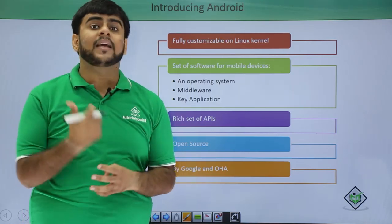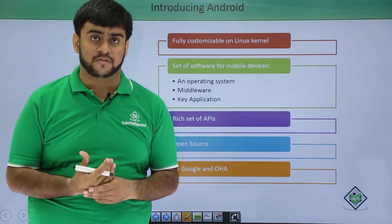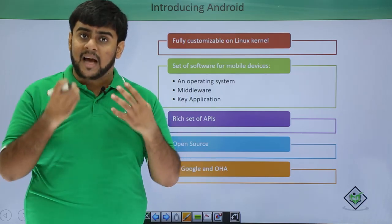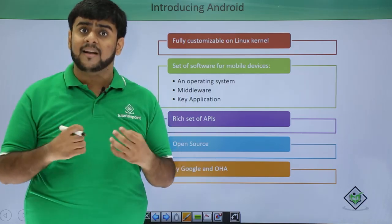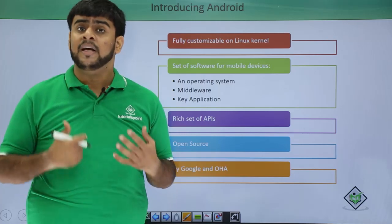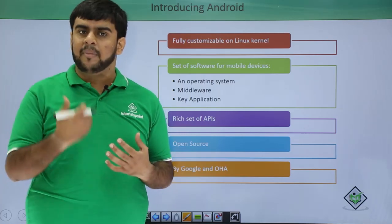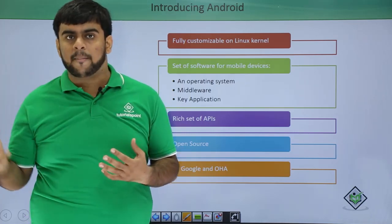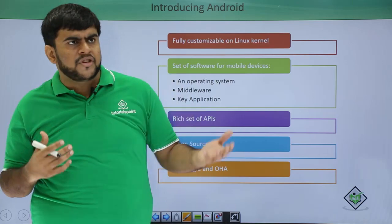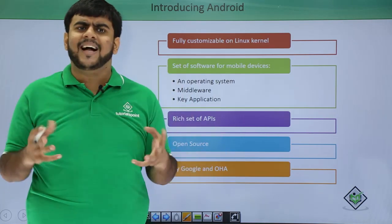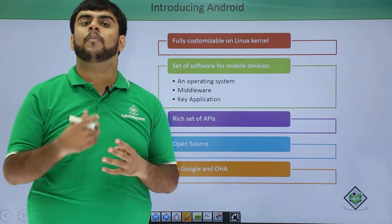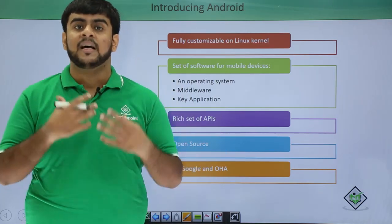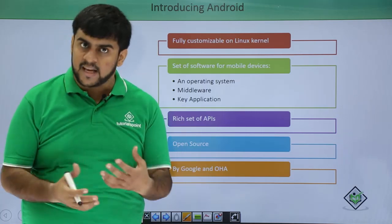Now, what do we mean by key applications? Key applications are nothing but the applications that are inbuilt in our operating system. For example, phone, SMS, logs, camera, Gmail — things that are already available on a pre-built operating system are known as key applications.